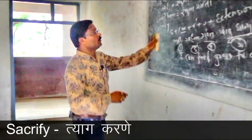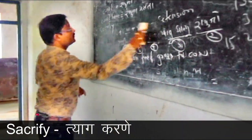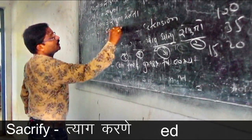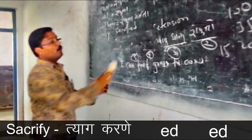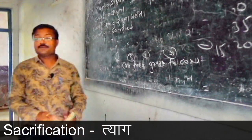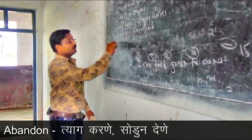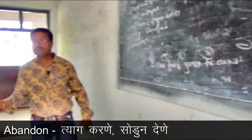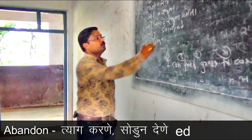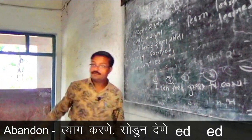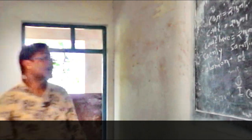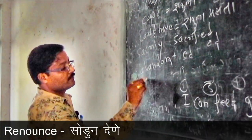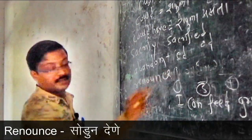Second form of sacrifice is sacrifice, third form is sacrifice, noun form is sacrification. Second word for this is 'abandon' — abandon means tag karne, sodun dene. Second form abandon, third form abandon. Third word is 'renounce' — renounce means sodun dene, tag karne. Second form renounced, third form renounced.